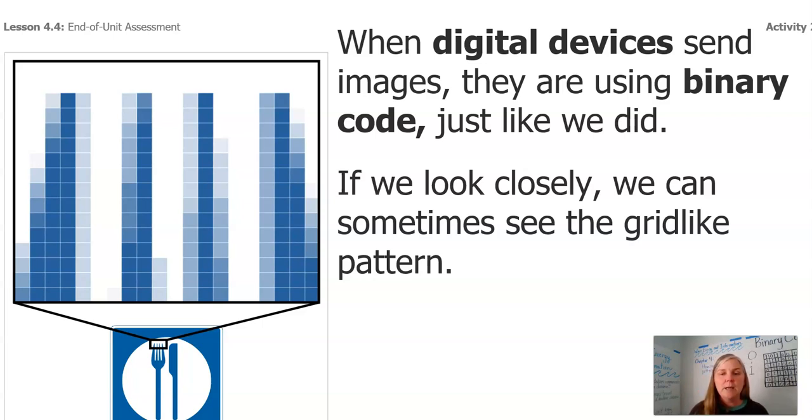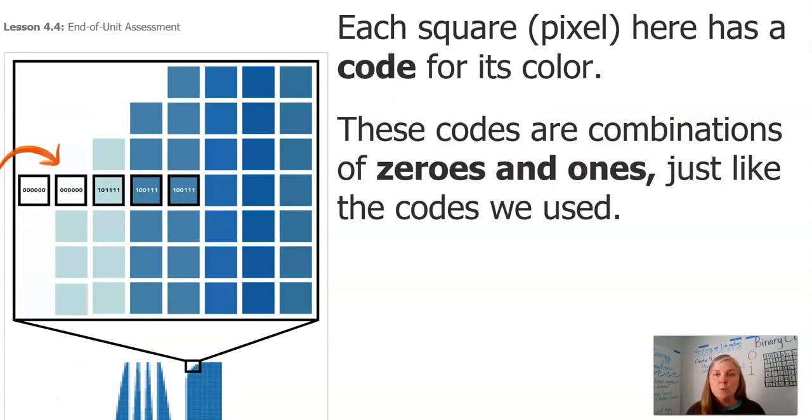If we look closely, we can sometimes see the grid-like pattern or the pixels here. So this is a very zoomed-in picture of the fork and knife. Remember, we were looking at what the message was that this was sending not long ago. Each square is a pixel. Here has a code for its color. That's a lot of codes. These codes are combinations of zeros and ones, just like we use. So if you look closely here, like the white component's all zeros, but this lighter blue is 1, 0, 1, 1, 1, 1, 1. Look at the difference here in the next blue.